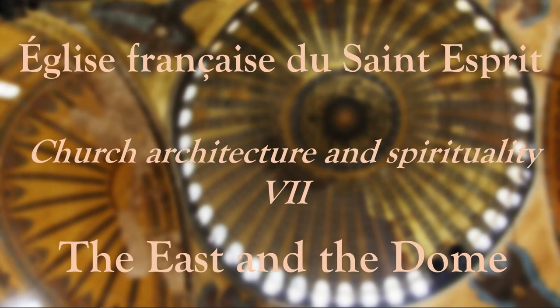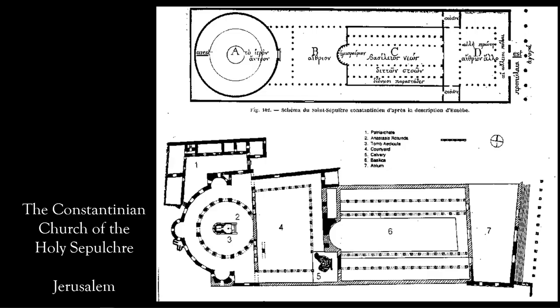Hello and welcome back to our little series on church architecture and spirituality. Today we're going to be looking at the churches of the east and the importance of the dome. We've already seen that early Christian churches in both east and west were built around two main patterns: an elongated basilica, and a round building centered on a saint's tomb or on a holy place.